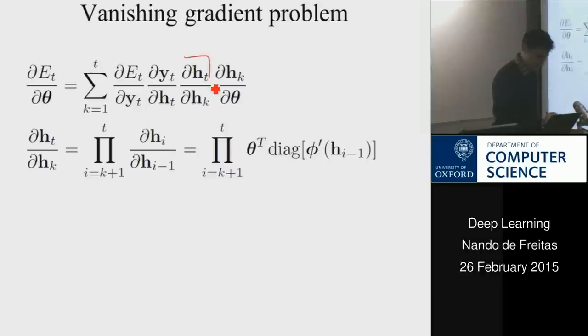Now, this term, which is the derivative of the hidden layer of time t with respect to the layer of time k, is itself, that Jacobian is itself a product of Jacobians, because I still have to go from t to k. If I go layer by layer taking derivatives, I actually need to take a product of all the Jacobians between step k and step t.